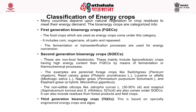Examples of second generation energy crops are perennial forage crops like switchgrass (Panicum virgatum), reed canary grass (Phalaris arundinacea), lucerne or alfalfa (Medicago sativa), napier grass (Pennisetum purpureum), and elephant grass (hybrid Miscanthus giganteus). Non-edible oil crops like Jatropha curcas, which contains 30–50% oil, and soap nut (Sapindus species), which contains around 52% oil, also come under this category.